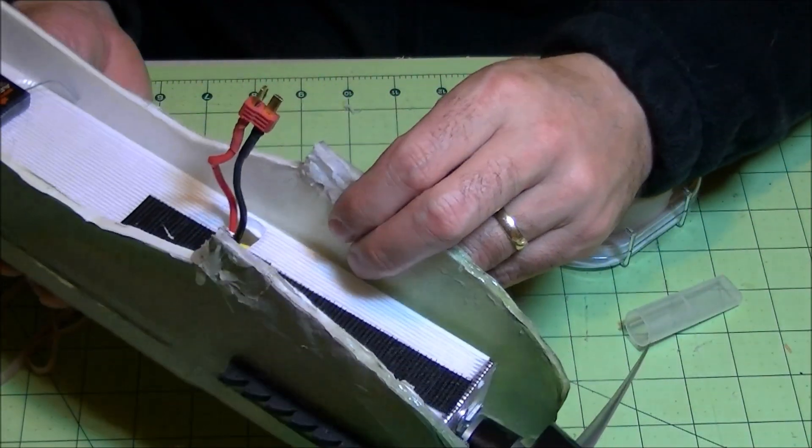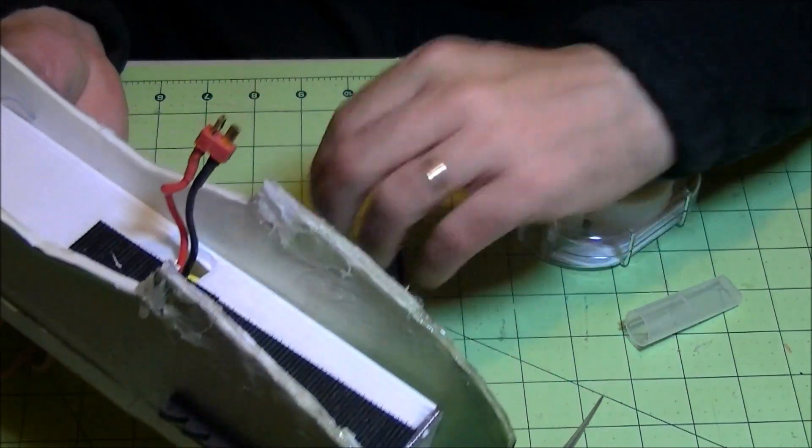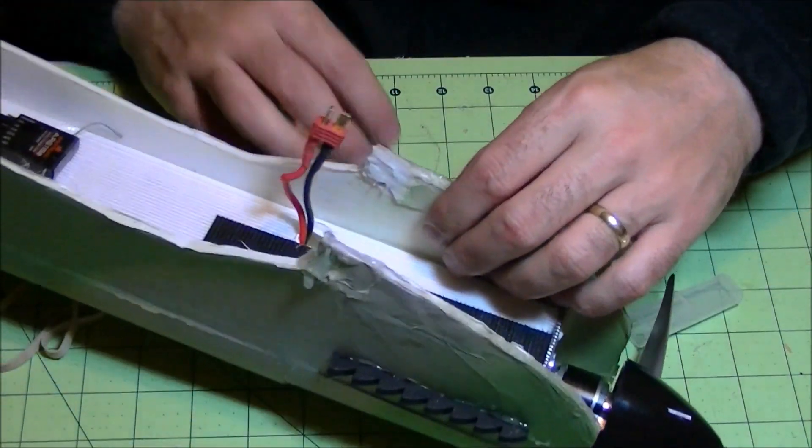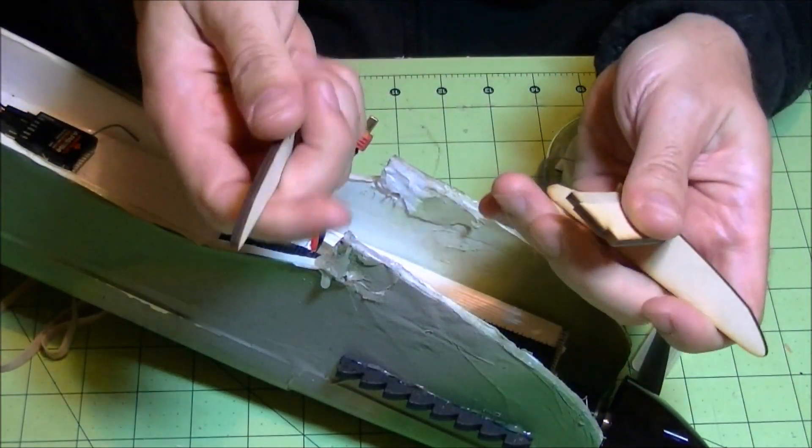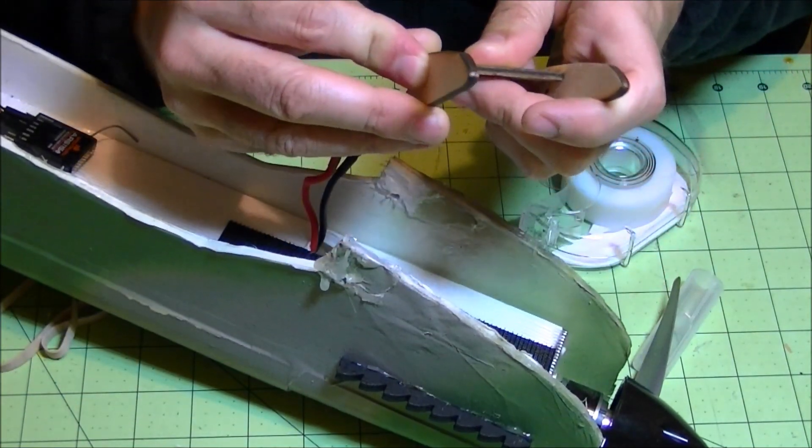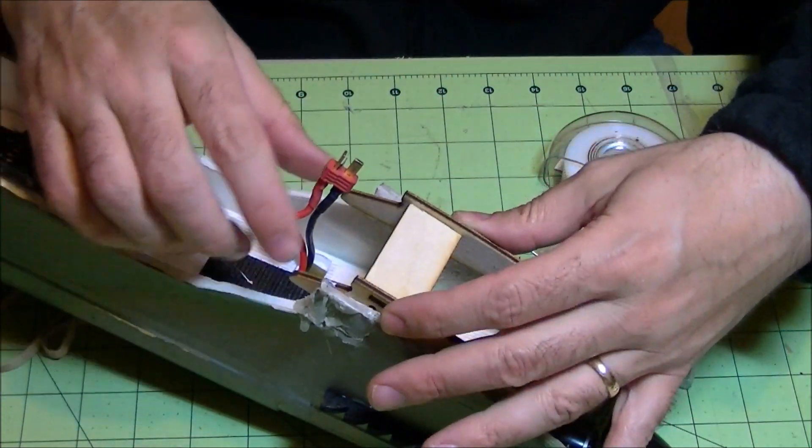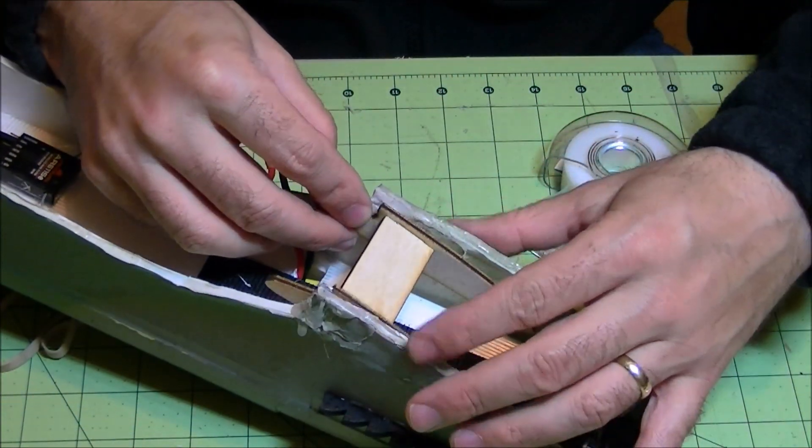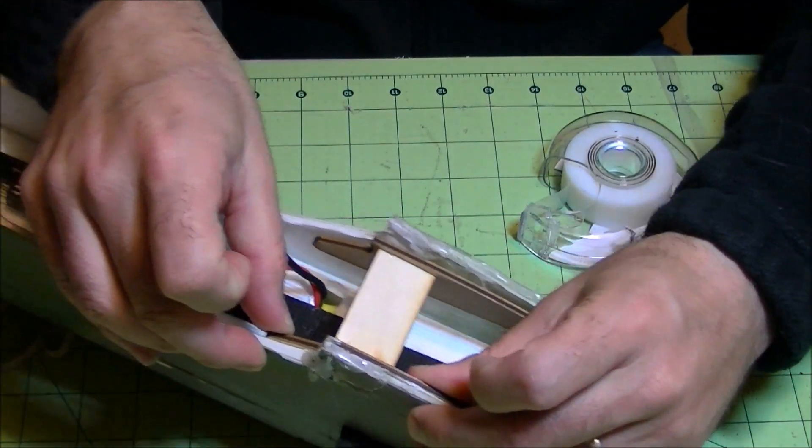Then before we glue anything, before we do any gluing at all, we want to make sure everything fits in. So we're going to do a test fit. Take your front wing box and, like I said, it's not glued together yet. Put it together and it should be a pretty tight fit. Then we're going to test fit that in here. Make sure it fits nice and it should line up right along the back here.